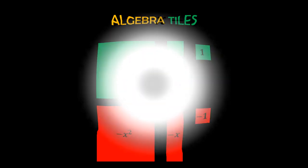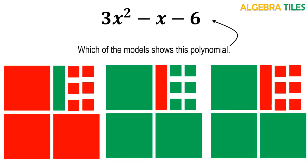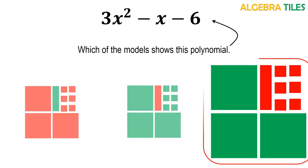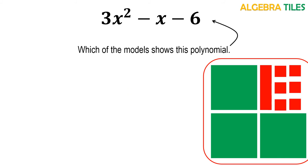Let me give you a polynomial and have you identify which is the right modeling of it. The correct answer is this one. We need 3x squared so we used the x squared tile 3 times. We need negative x, so we used the x tile in red color. We need negative 6, so we used 6 ones tiles in red color, representing that those terms are negative. For positive terms we use green, and for negative terms we use red.